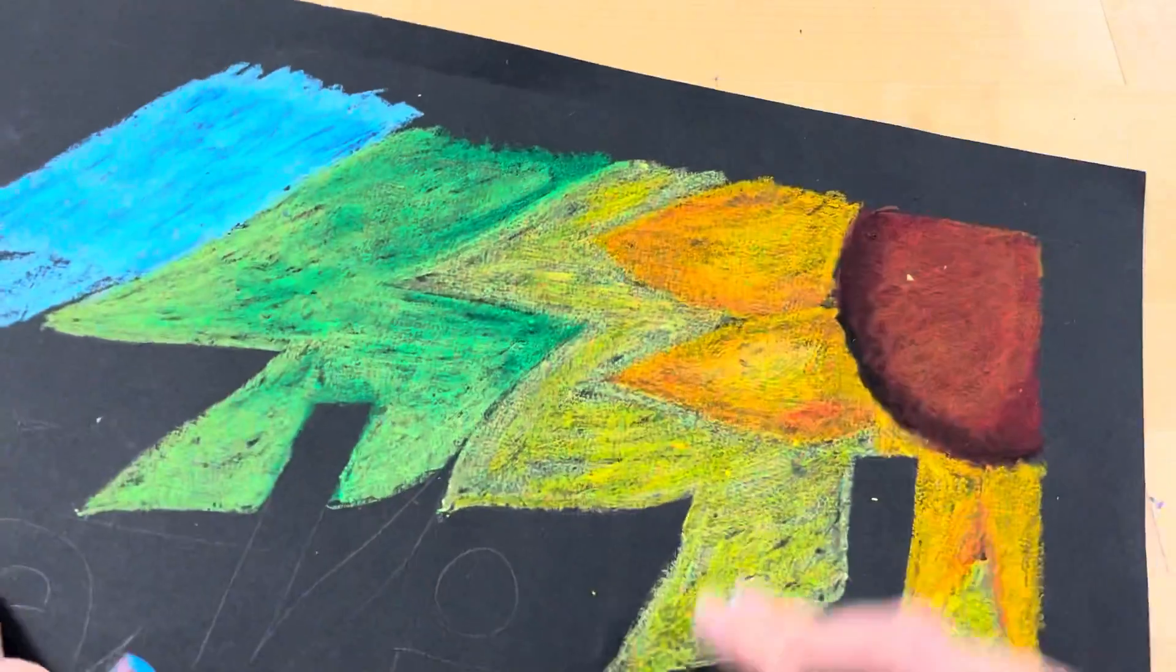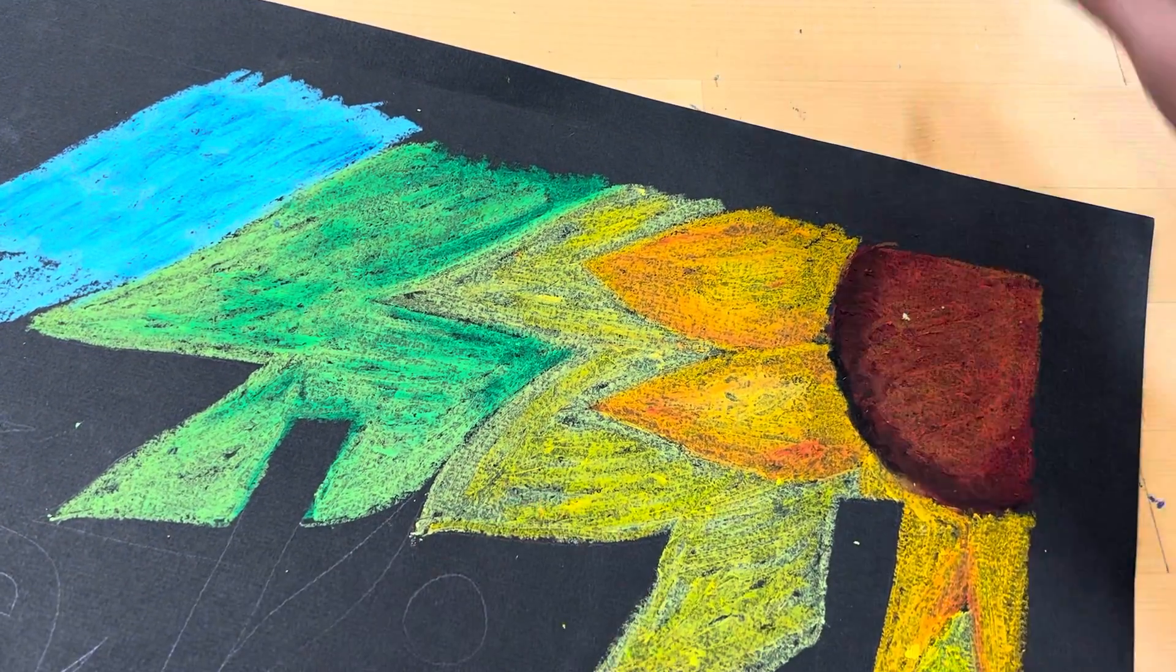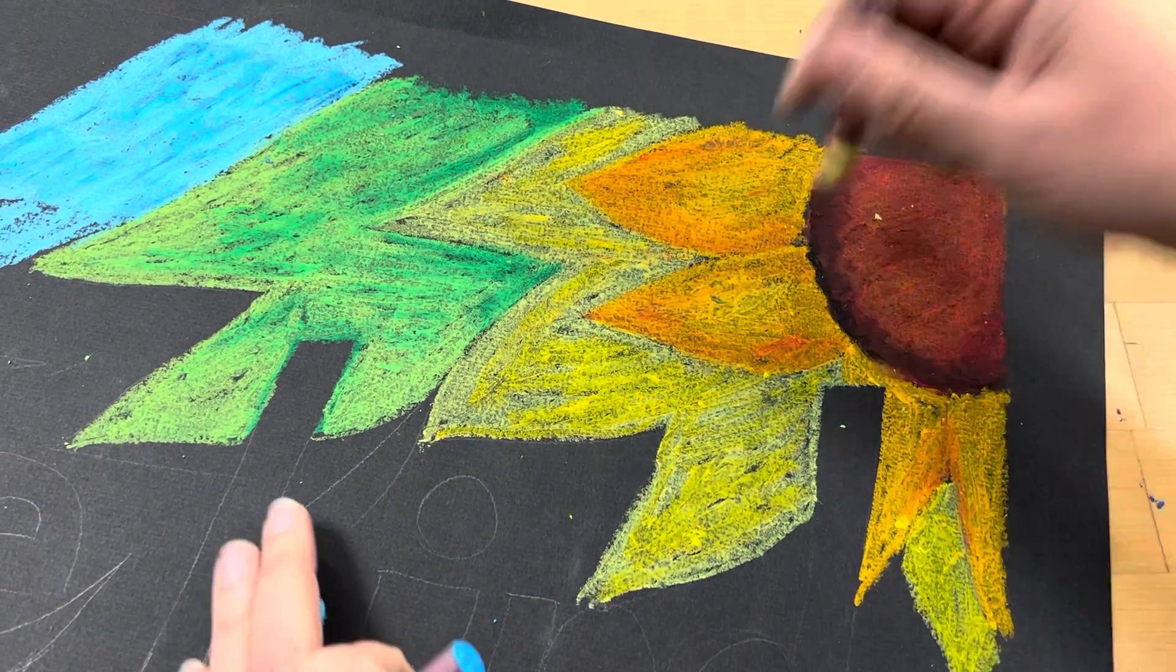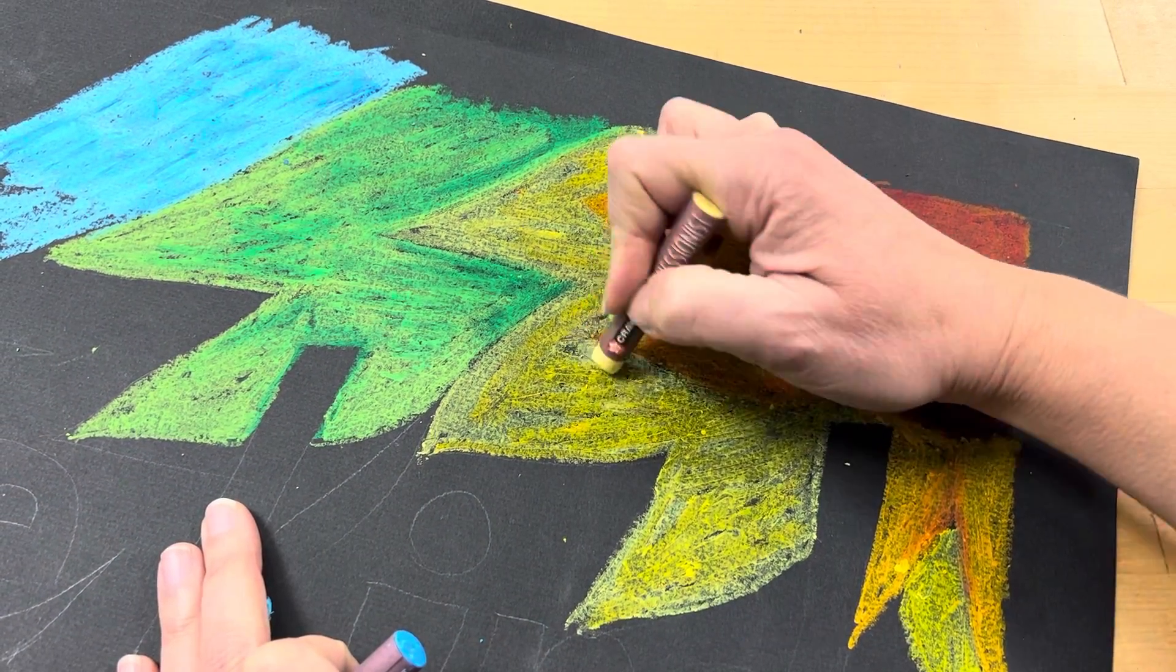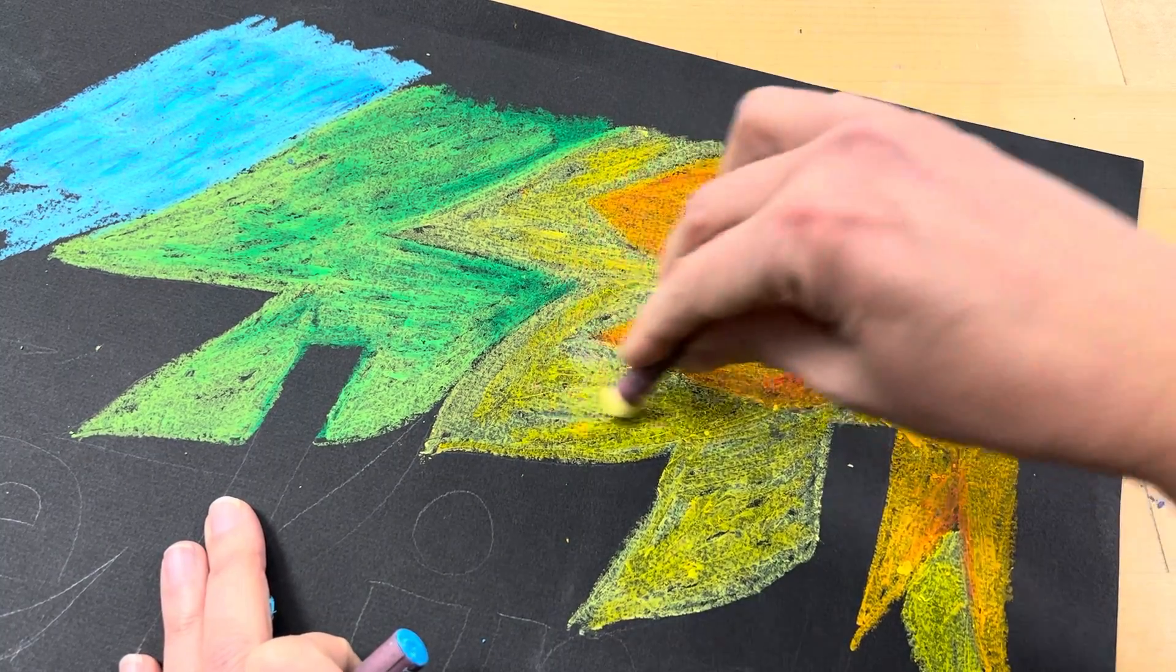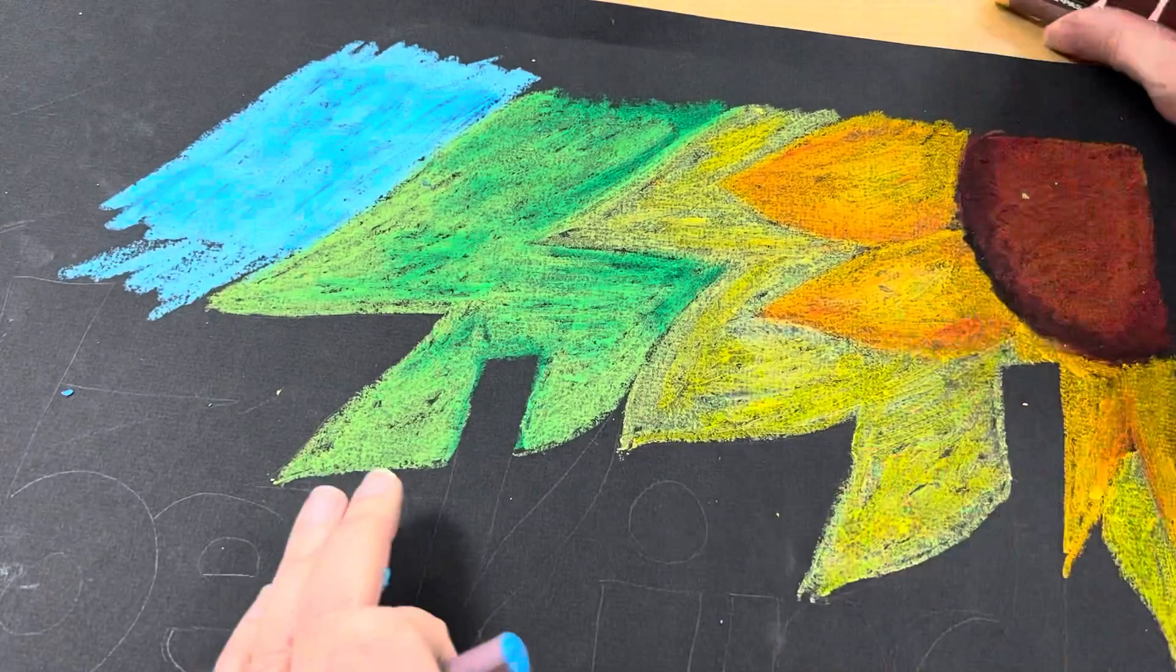You can see here, my yellow needs some more work still. The yellow on black is a little tough, so I've got to go back and work that in. I think I might use some of this lighter color in here to pick some of those highlights up a little bit more.